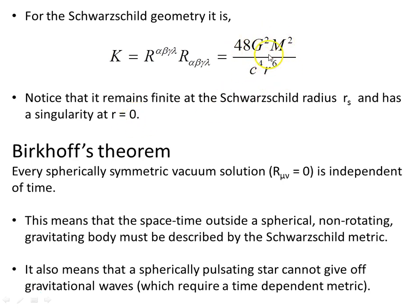For the Schwarzschild metric, Schwarzschild spacetime has a real physical singularity at r equals 0. Now, in Birkhoff's theorem, every spherically symmetric vacuum solution, that's the Ricci tensor set equal to 0, is independent of time.